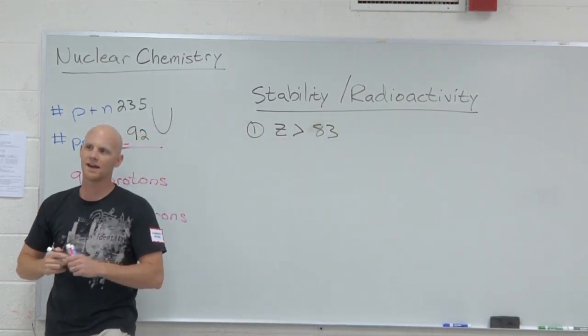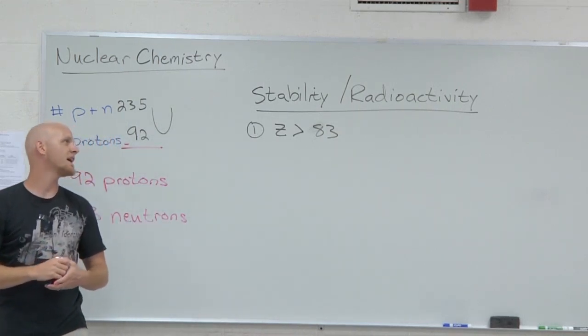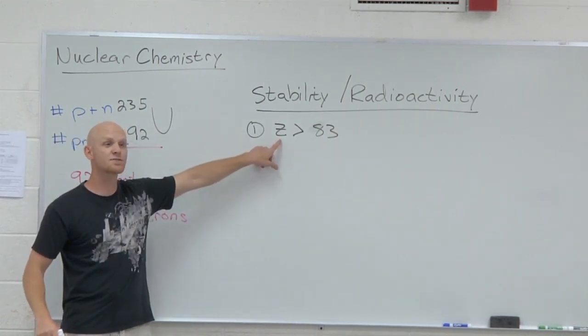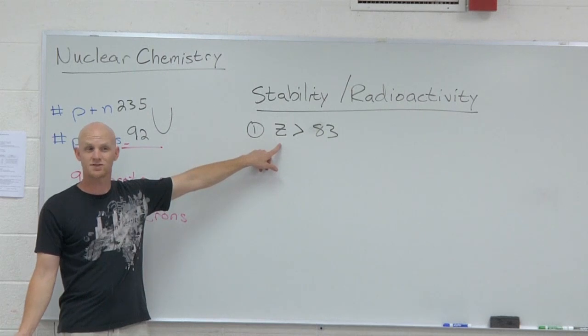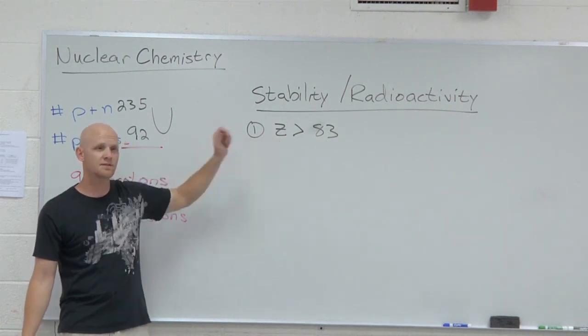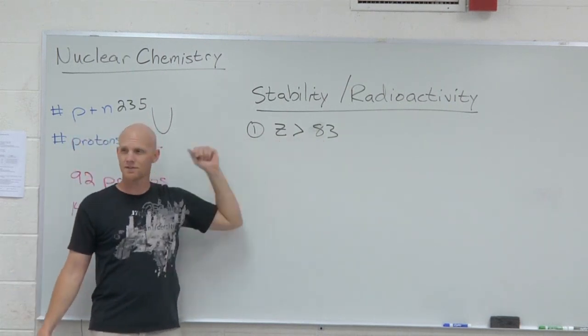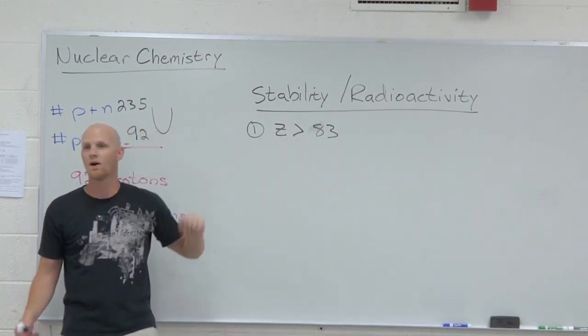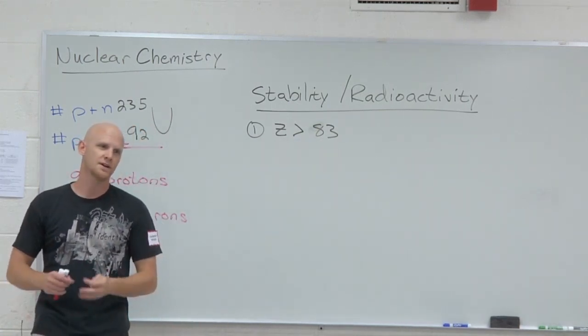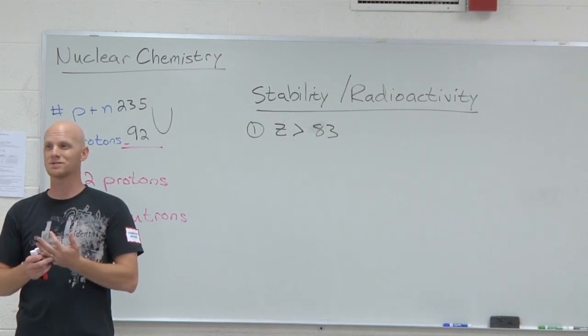So you want to look for the atomic number bigger than 83. So for atomic numbers 84 and higher, so notice Z here stands for the charge, and the nucleus is charged because that's protons, so that's the number of protons. And so for atomic number 83 and larger, I'm sorry 84 and larger, bigger than 83, all those elements are radioactive. If you look at the first one on your list on the periodic table, it's polonium.